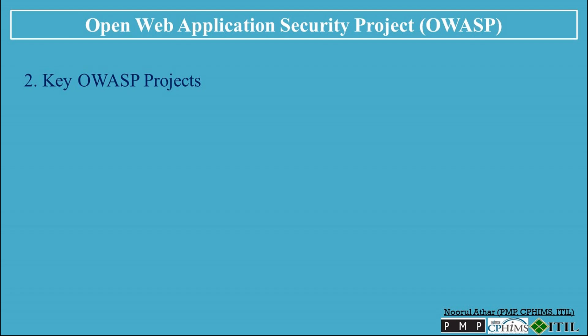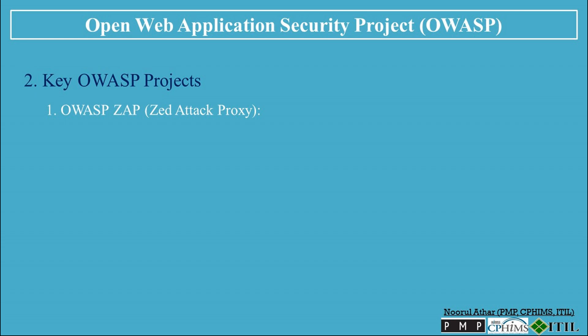Key OWASP Projects. OWASP is home to several valuable projects, and today I'll highlight a few that every developer should be aware of. First, OWASP ZAP — the Zed Attack Proxy. This is one of the most popular security testing tools. It's used to find vulnerabilities in web applications, especially during the development phase. ZAP provides automated scanners and a set of tools to help security professionals find vulnerabilities such as SQL injection, cross-site scripting, and more.